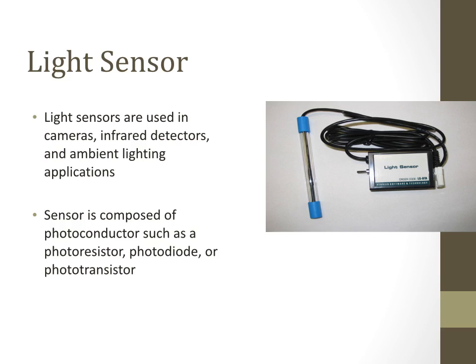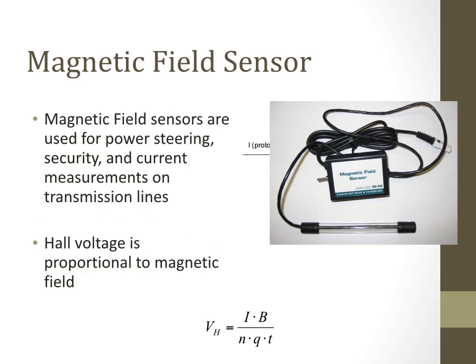Magnetic field sensors are used for power steering, security, and current measurement on transmission lines. The Hall voltage is proportional to the magnetic field, as shown in the formula. Magnetic sensors leverage this principle for power steering, security applications, and current measurement on transmission lines.